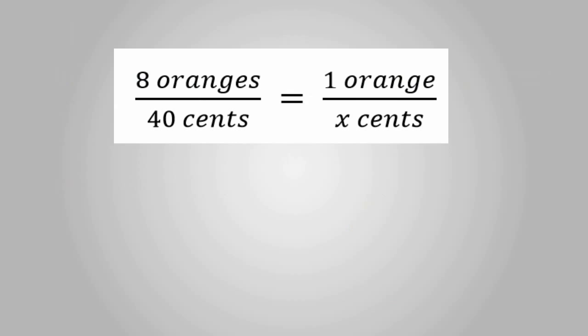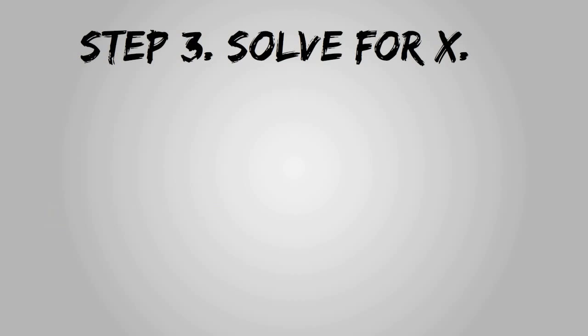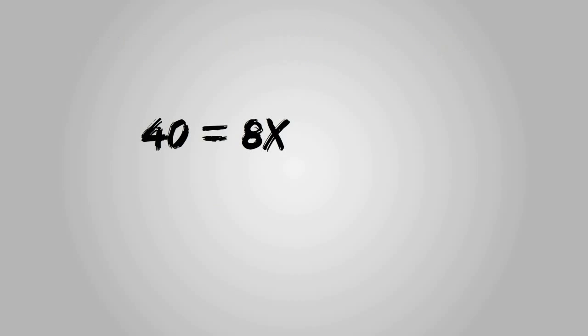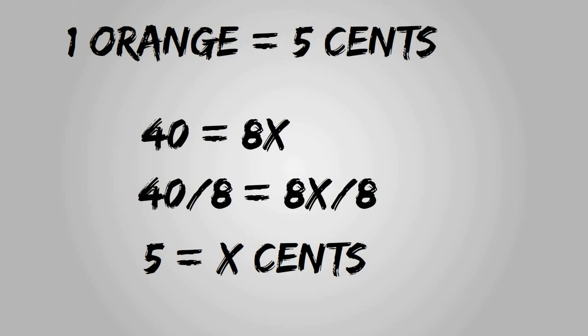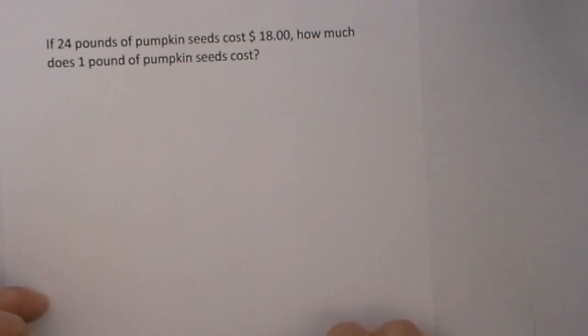After the proportion is set up, cross multiply. Step 3: Solve for x. Therefore, 1 orange equals 5 cents. Let's look at some more examples.